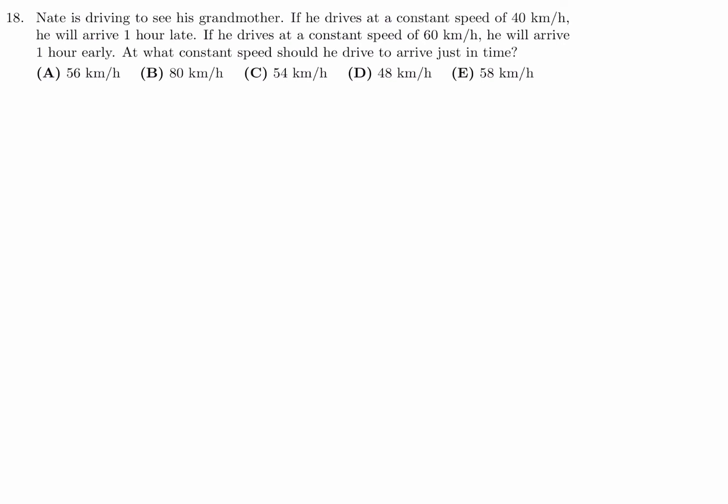Nate is driving to see his grandmother. If he drives at a constant speed of 40 kilometers an hour, he will arrive one hour late. If he drives at a constant speed of 60 kilometers an hour, he will arrive one hour early. What constant speed should he drive to arrive just in time? Speed is equal to distance over time. The first sentence basically tells me that when he's driving 40, he will arrive one hour late, so too much time, T plus 1. When he's driving 60, he is driving faster, so his time is less by one hour, T minus 1. So basically I have to figure out D over T. That means I have to figure out T and then D.